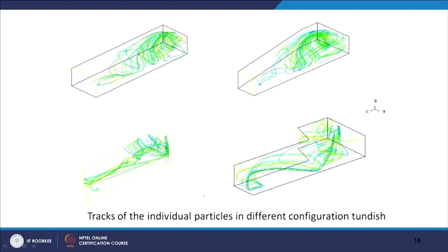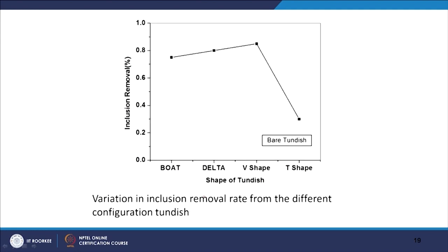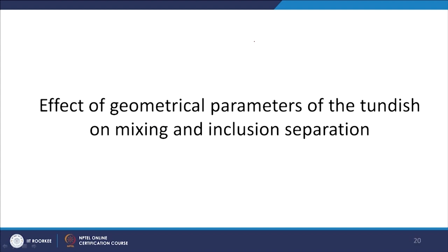Inclusion particle trajectory studies can also be done for different tundish shapes. What was found was that inclusion removal was minimum for the T-shape and maximum for the V-shape. These results depend on many parameters, but that was one of the key findings. The effect of geometrical parameters of the tundish on mixing and inclusion separation was also studied.